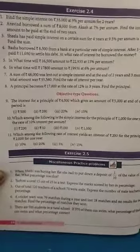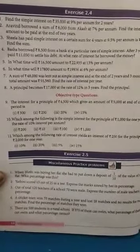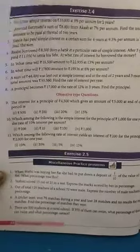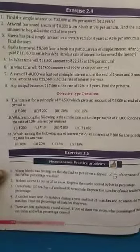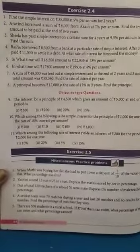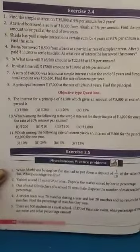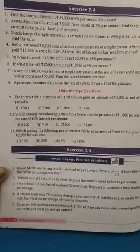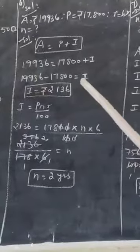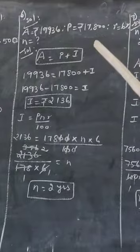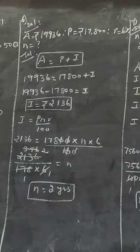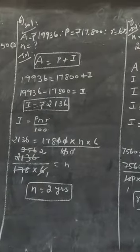Problem 6: In what time will rupees 17800 amount to rupees 19936 at 6% per annum? Here also, A value, P value, and r value are given, and you have to find n. For the solution: A = 19936, P = 17800, and r = 6%.